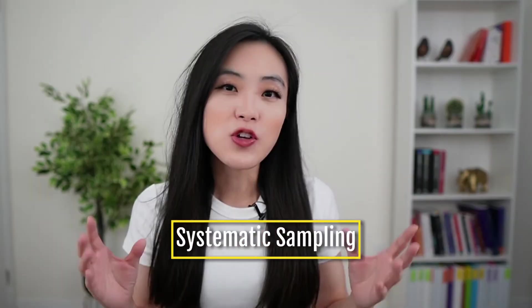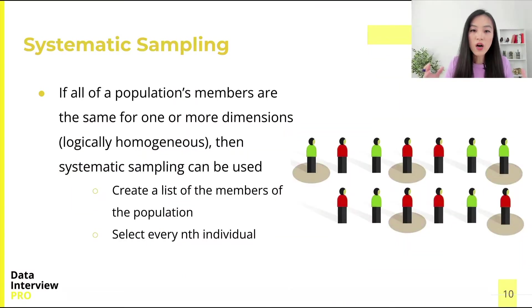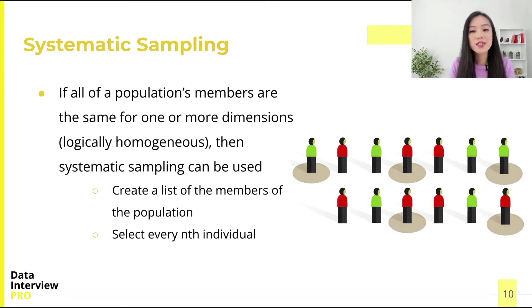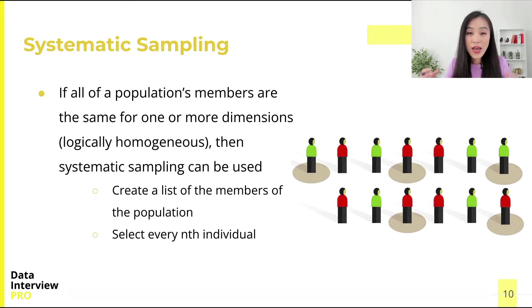In this video let's talk about another sampling technique: systematic sampling. Suppose all of a population's members are the same for one or more dimensions — in other words, a population is logically homogeneous. You could conduct systematic sampling by creating a list of all members of the population and selecting every nth individual.